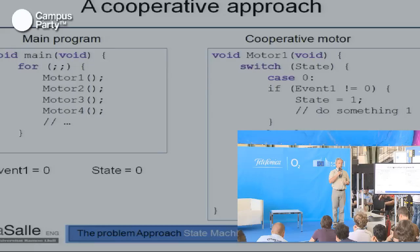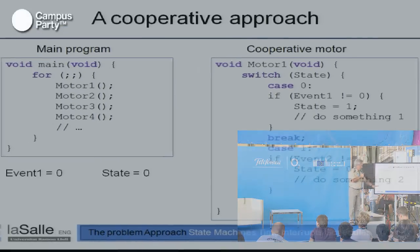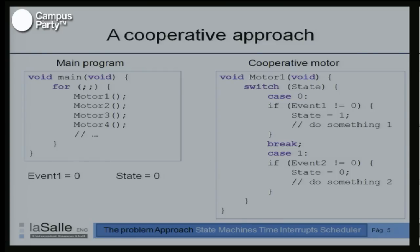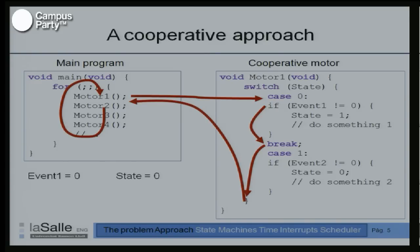Let me put an example. At the beginning, the event_one variable is zero and the state of our cooperative motor is zero. The system calls motor_one, jumps to motor_one, evaluates event_one — it's zero, so nothing happens. Break. Then the main loop runs again: motor_one, motor_two, three, four. In state zero, event_one has not risen. But imagine that at this moment, the external hardware event_one rises.